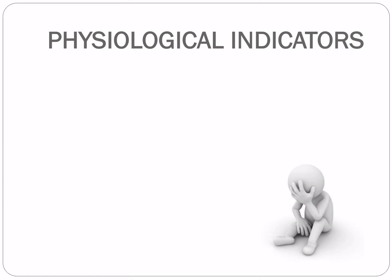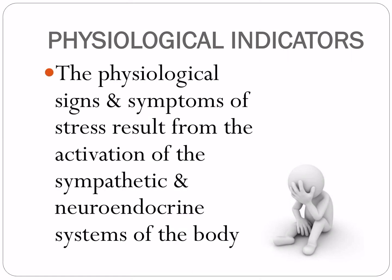For your physiological indicators, the physiological signs and symptoms of stress result from the activation of the sympathetic and neuroendocrine system of the body. We can tell if a person is under stress if we notice physiological indicators — for example, he breathes rapidly or has an increased heart rate. These are responses made by your sympathetic nervous system and neuroendocrine systems.